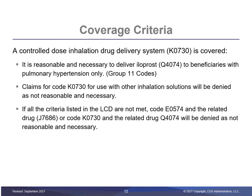A small-volume ultrasonic nebulizer and related accessories are reasonable and necessary to administer a treprostinil inhalation solution only. Claims for code E0574, Ultrasonic or Electronic Aerosol Generator with Small Volume Nebulizer, used with other inhalation solutions, will be denied as not reasonable and necessary. A controlled dose inhalation drug delivery system is covered when it is reasonable and necessary to deliver iloprost to beneficiaries with pulmonary hypertension only. Claims for code K0730, Controlled Dose Inhalation Drug Delivery System, for use with other inhalation solutions, will be denied as not reasonable and necessary.